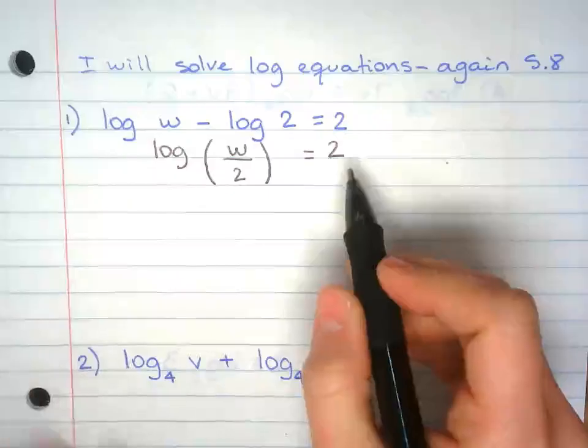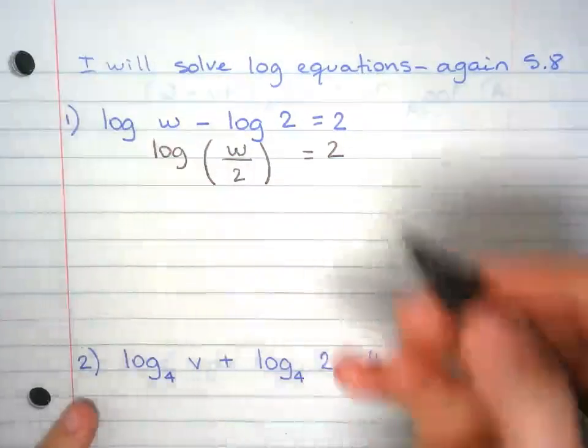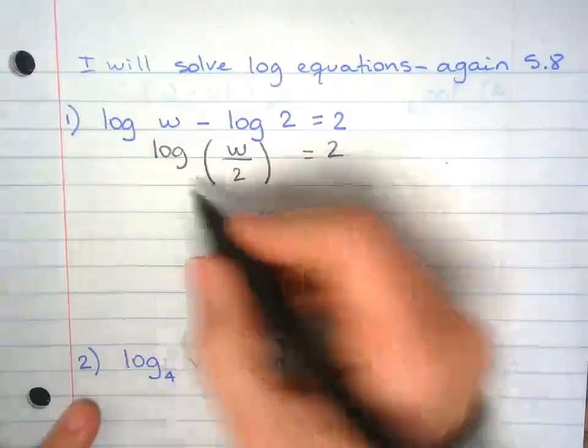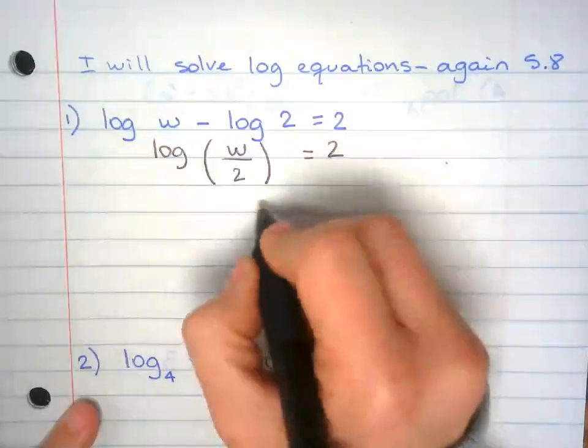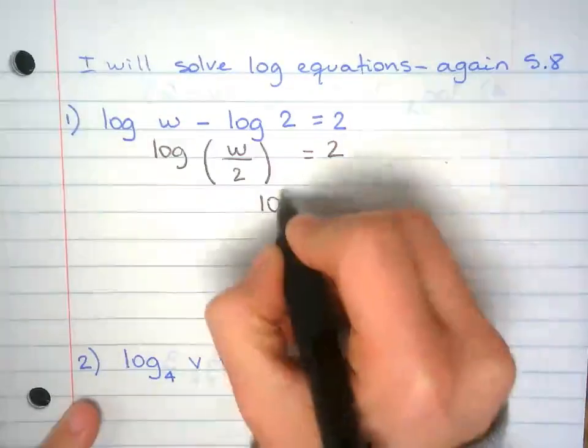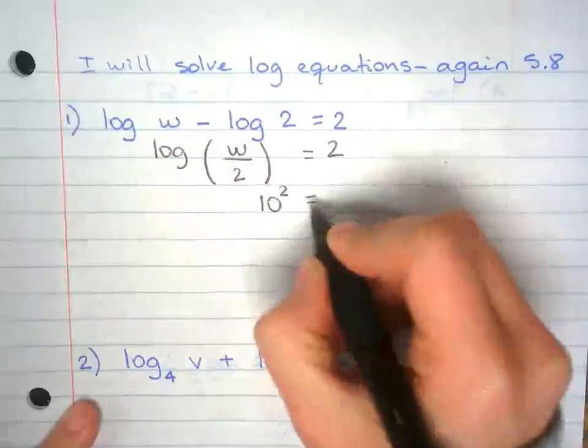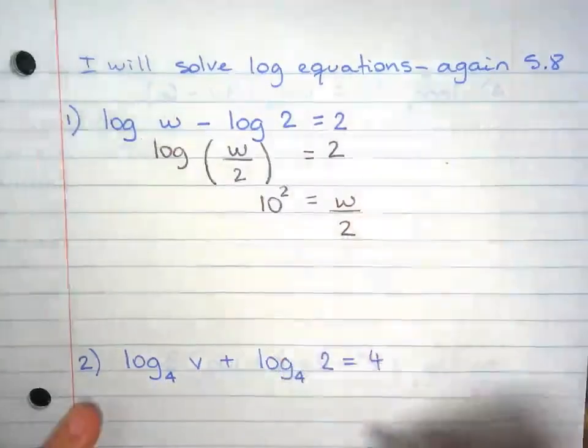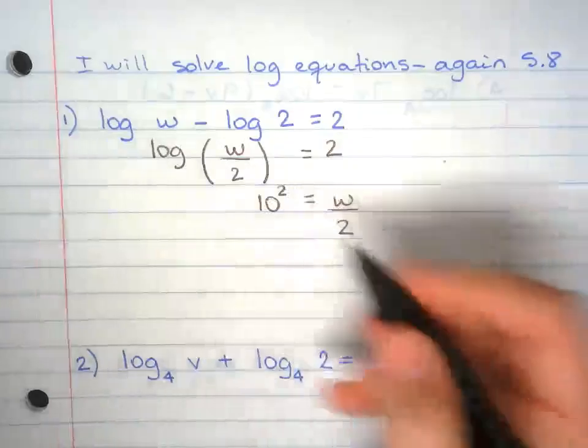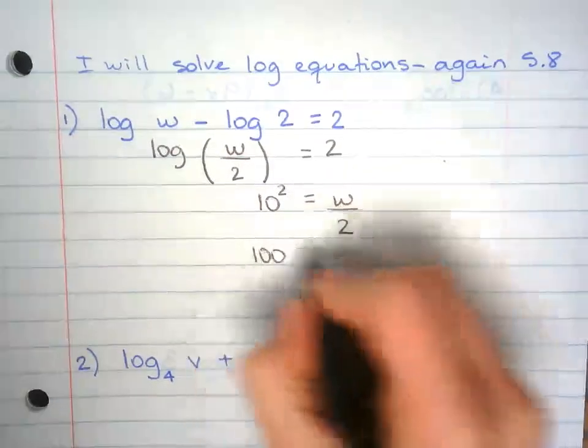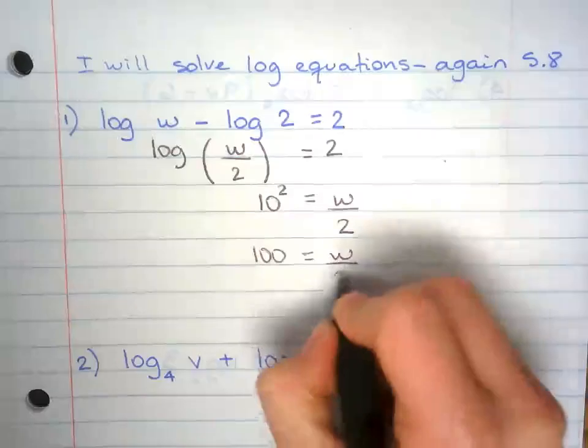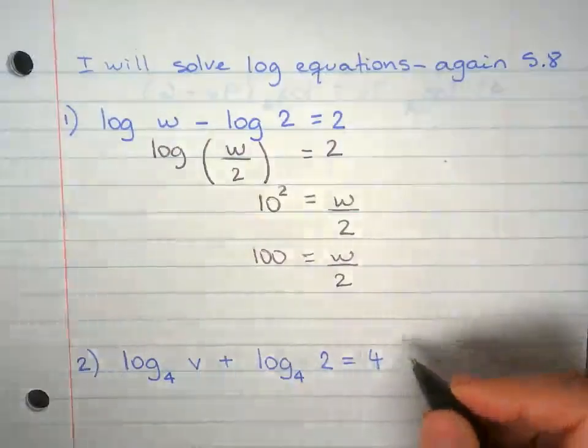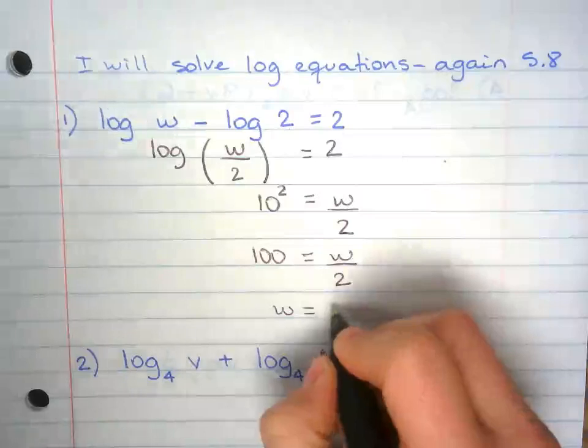Now we're going to rewrite this as the exponential function. Log without a base means the base is always 10. So 10 raised to the exponent 2 equals the argument, w over 2. 10 squared is 100 equals w over 2. Multiply both sides by 2, you get w equals 200.